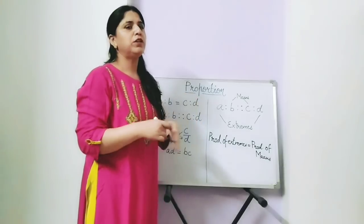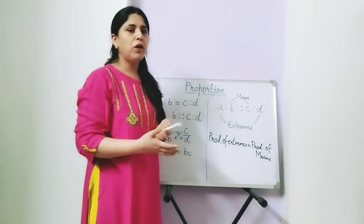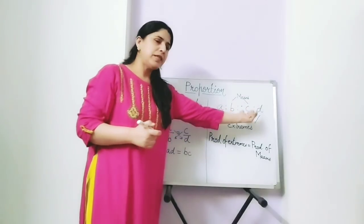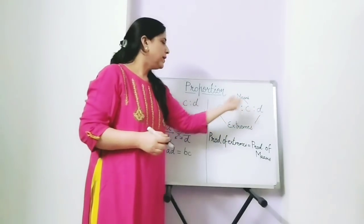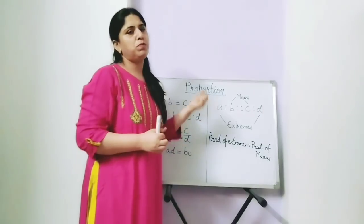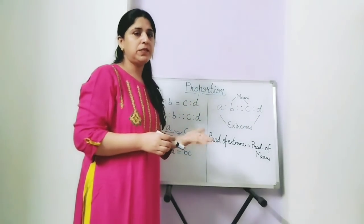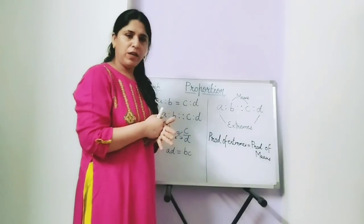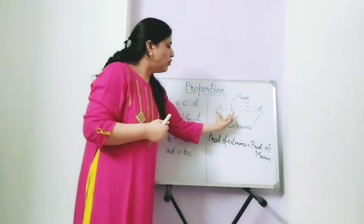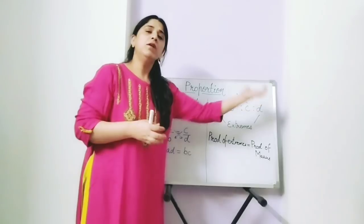We can check whether four given numbers are in proportion or not by writing the two ratios. The product of extremes should be equal to the product of means — if it is equal, then the two ratios are in proportion, and the four terms are said to be in proportion.